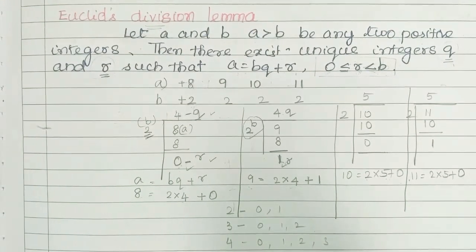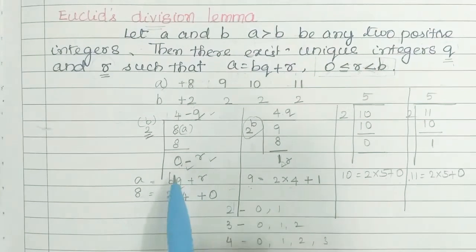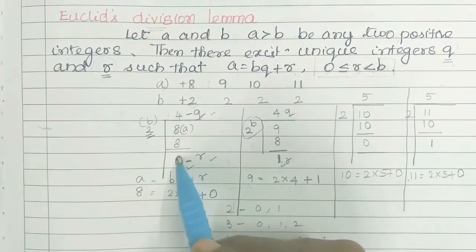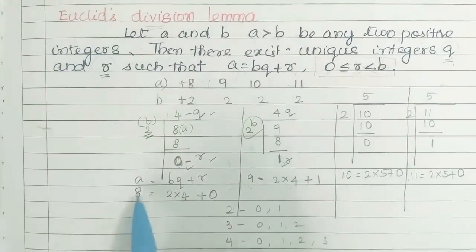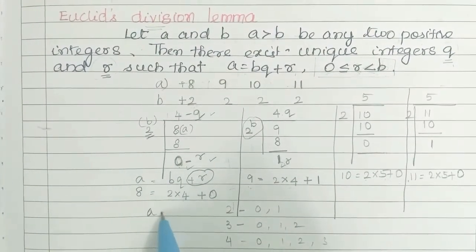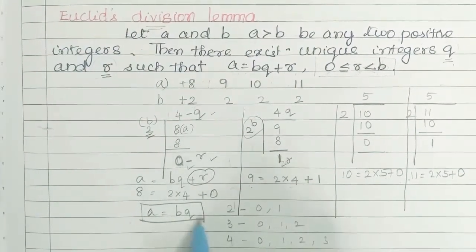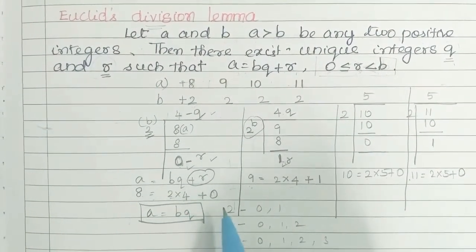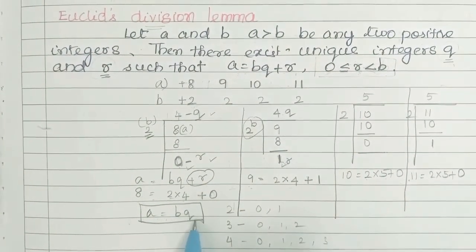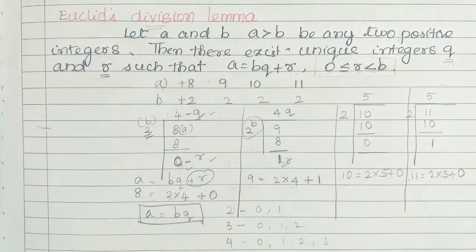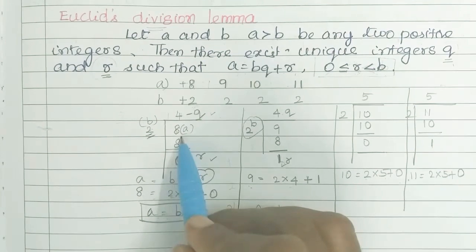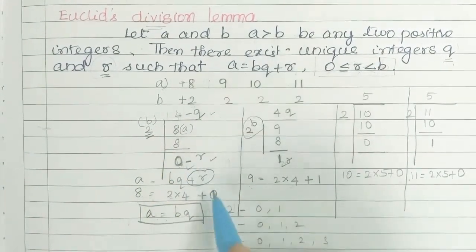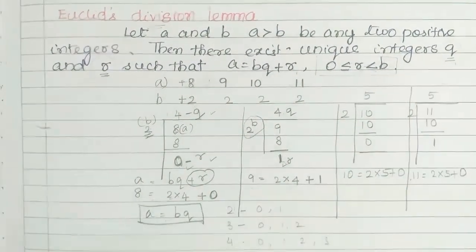Note from page 38: The remainder is always less than the divisor. If the remainder is 0, for example 8 equals 2 into 4, the remainder is 0 and A equals BQ. Similarly, if b divides a, then a equals bq — that means b is a divisor of a. In the two times table, 8 is there, so 2 is a divisor of 8.